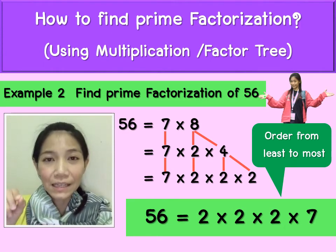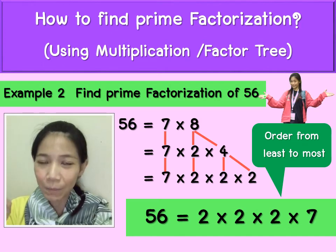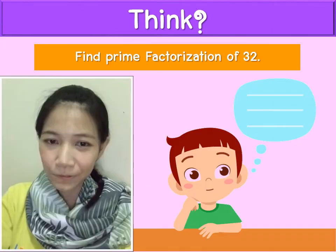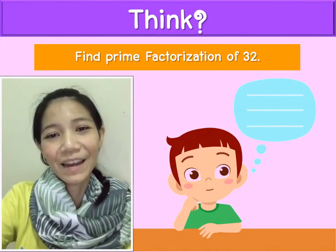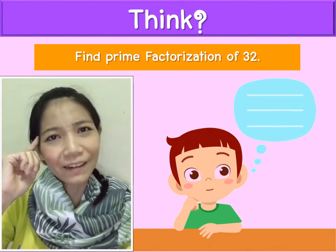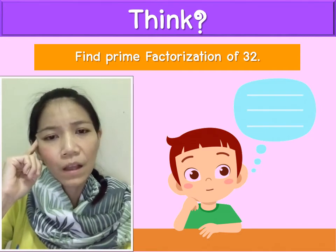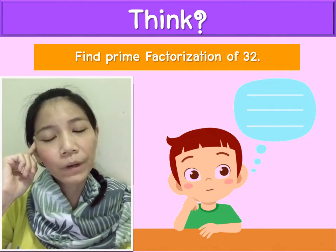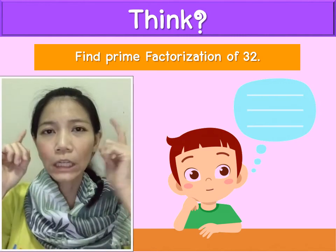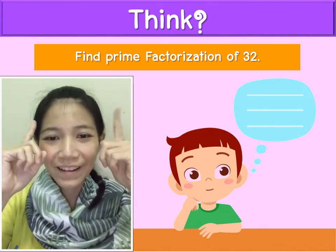So 56 equals 2 times 2 times 2 times 7. Correct — good job! Write it as the product of prime numbers. Next, let's think together: Example 3 — prime factorization of 32.